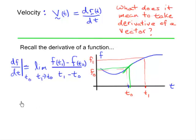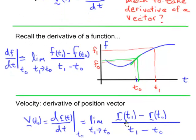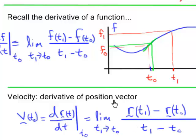The definition of the derivative of a vector is structurally very similar. When we define velocity as the derivative of the position vector, we take two position vectors — one at time t0, the other at time t1 — divide by the difference in time, and then take the limit as the later time approaches the original time. It's a completely analogous thing to what we had for functions.